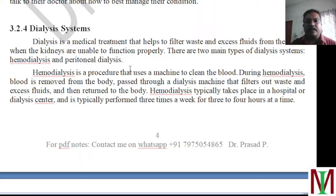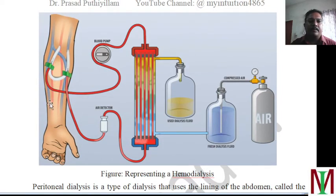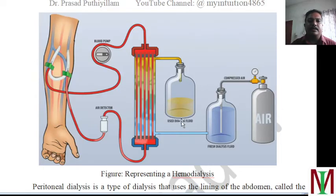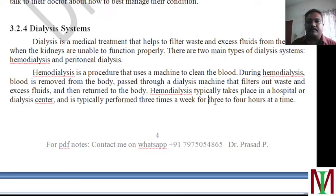There are two types of dialysis — mainly hemodialysis as well as peritoneal dialysis. Hemodialysis: blood from the blood stream is taken out, filtered, ion exchange reactions happen, and fresh solution is pumped in; the formed urine is collected separately. It is a procedure which uses a machine to clean the blood. During hemodialysis, blood is removed from the body and passed through a dialysis machine which filters out waste and excess fluid, and then it is returned to the body. It has to be performed in a hospital or dialysis center, three times a week for three to four hours at a time.